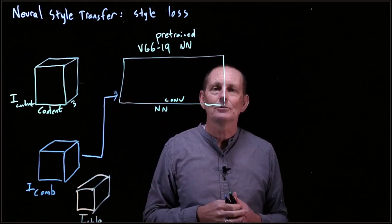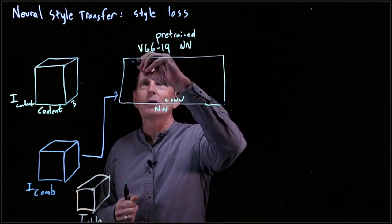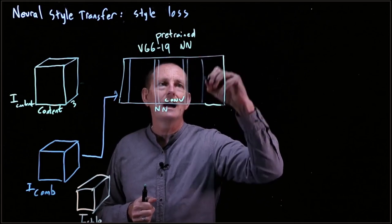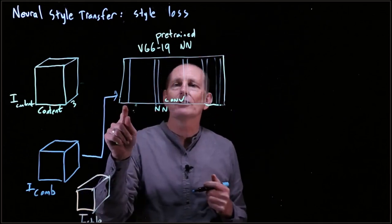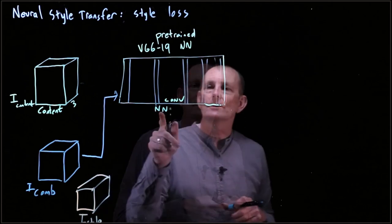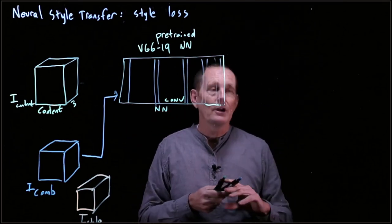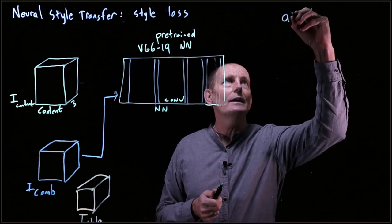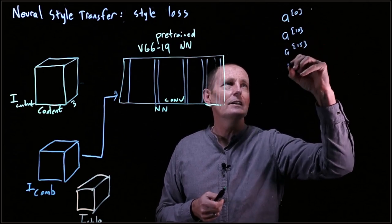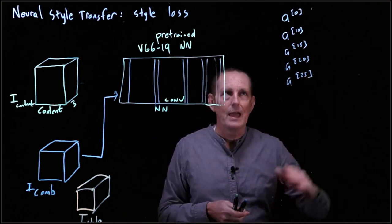Style probably depends on both low-level and high-level elements. So we're going to look at this neural network and pick out four or five different outputs — maybe from the first, fifth, fifteenth, twenty-fifth, and thirtieth layers — giving us a representative sampling from low-level to high-level layers.